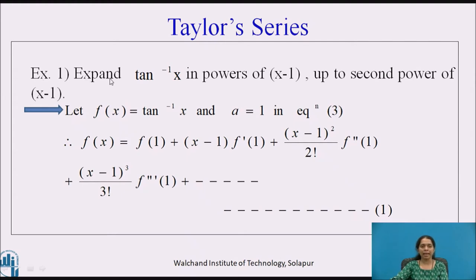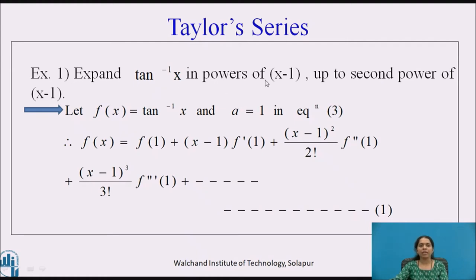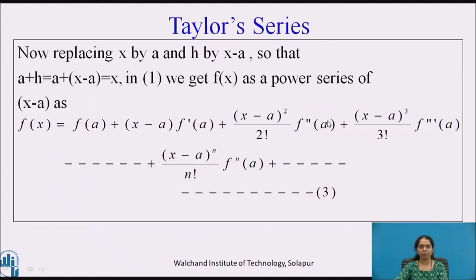Example 1: Expand tan⁻¹x in powers of (x−1) up to the second power of (x−1). For tan⁻¹x, we need the expression in terms of (x−a), so among the three forms, we use Representation 3. Let f(x) = tan⁻¹x, and comparing with the (x−a) form, the value of a is 1. We substitute this value of a into Representation 3.